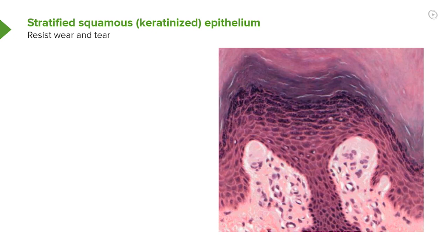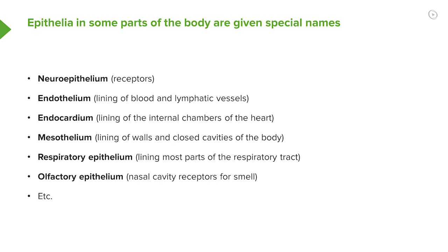Epithelia in some parts of the body are given special names. The main important point is that sometimes you'll come across terms like endocardium, endothelium, respiratory tract epithelium, mesothelium, or olfactory epithelium. These relate to special names we give to epithelia in certain parts of the body, and we'll come across these special names in later lectures.